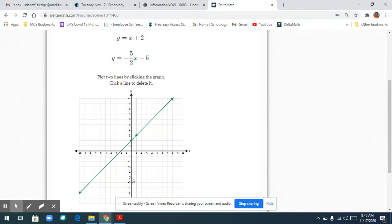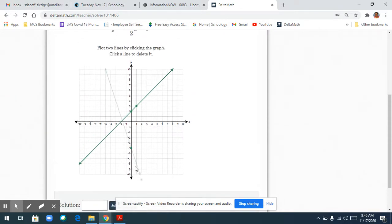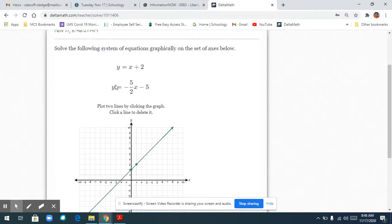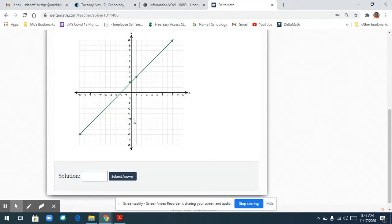My y-intercept is negative 5. On this one, my slope is negative 5 over 2. I can make the 5 negative or I can make the 2 negative, it doesn't matter. I'm just going to make the 5 negative, so I'm going to go down 5: one, two, three, four, five, and then over to the right 2. I could have gone up 5 and back 2, and I would have been right there.